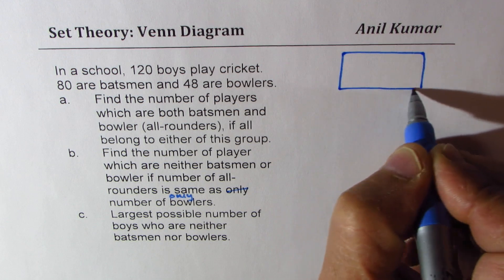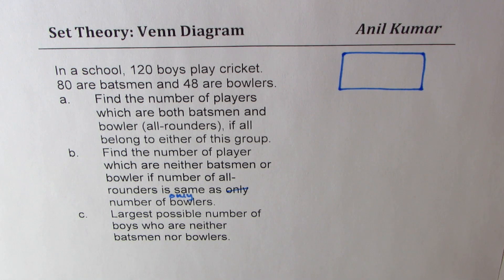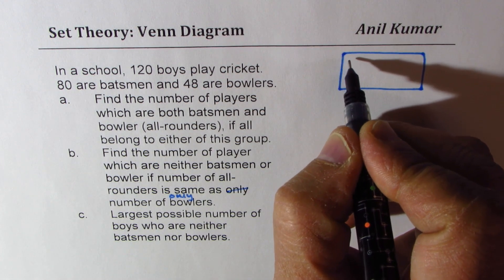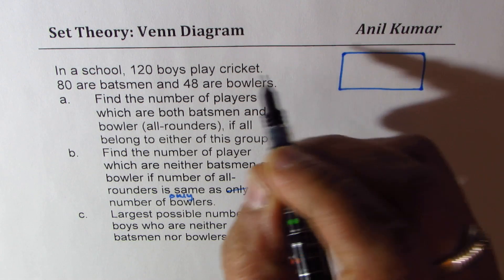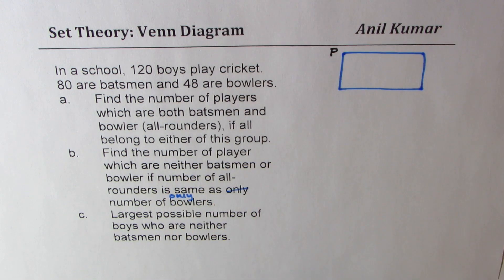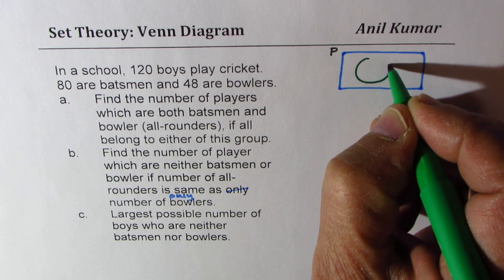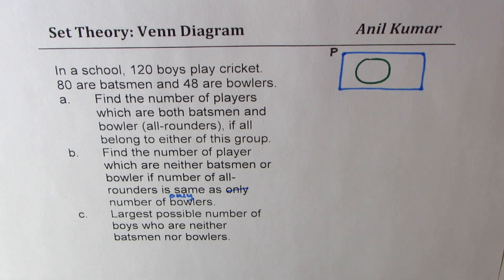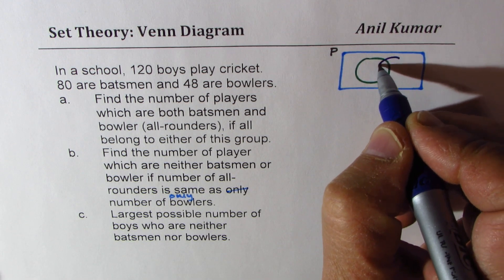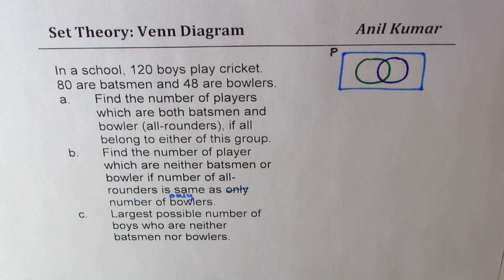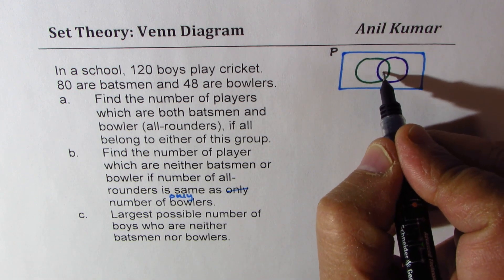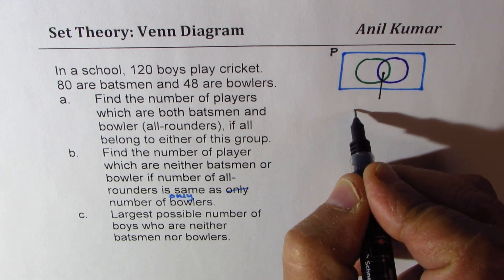That box represents all players — we call it the universal set P, the set of all the players. Now we have two groups: one group represents the batsmen and the other group represents the ballers. In between, we have all-rounders. So this number in between is the all-rounders.